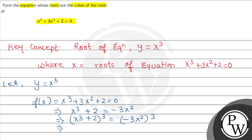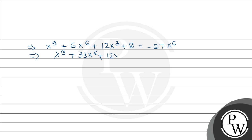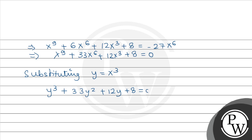Expanding the left side: x⁹ + 8 + 3·x³·2·(x³ + 2) = −27x⁶. Substituting x³ + 2 = −3x², we simplify and collect terms to get: y⁶ + 12y³ + 8 = −27y², which after rearranging gives y³ + 33y² + 12y + 8 = 0, after substituting y = x³.